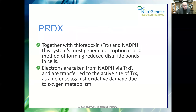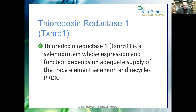This is why we need to go back to personalized care — what can be right for one person can be wrong for another. Together with thioredoxin and NADPH, this system forms reduced disulfide bonds in cells; electrons are taken from NADPH as a defense against oxidative damage. Please watch the webinar on NADPH and NADPH oxidase — there is strong evidence this is being overused by environmental toxins in all of us, amplified in those with genetic mutations that either don't make enough NADPH or have upregulated NOX enzyme. Thioredoxin reductase is a selenium protein whose function depends on adequate selenium supply.